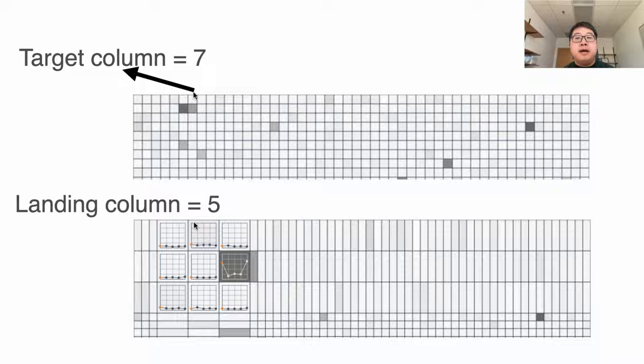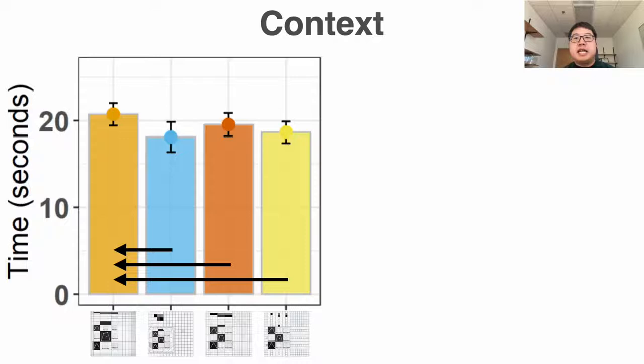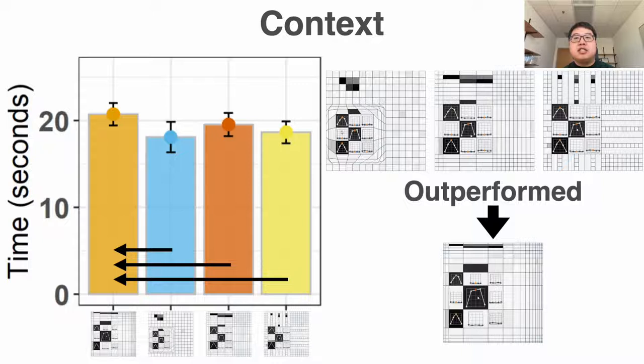In the search task, all conditions had a similar performance. Cartesian was slower than the other three in the context task with a small effect. We believe the different cell sizes in the Cartesian lens affects the performance of context switching.